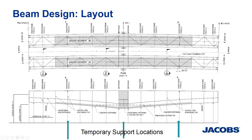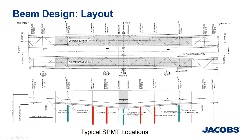The erection process involved bringing one steel segment, placing it over temporary supports, then adding additional segments and splicing. After the bridge was complete, the SPMT would squeeze in between the temporary supports, pick up the bridge, and take it to its final location. Every time a steel segment was placed in the field on temporary supports, that was captured in the MIDAS model — and as the deck was cast, we captured the locked-in stresses on the structure.